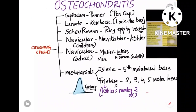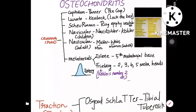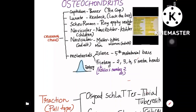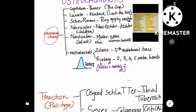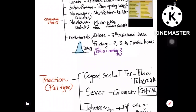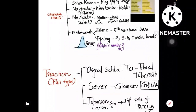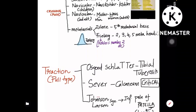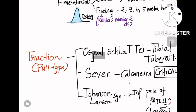Osteochondritis is divided into two types: one is the crushing or push type, and the second is the traction or pull type. In the crushing type there are many names to remember, whereas in the traction type there are only two to three names. Let's start with the traction type.